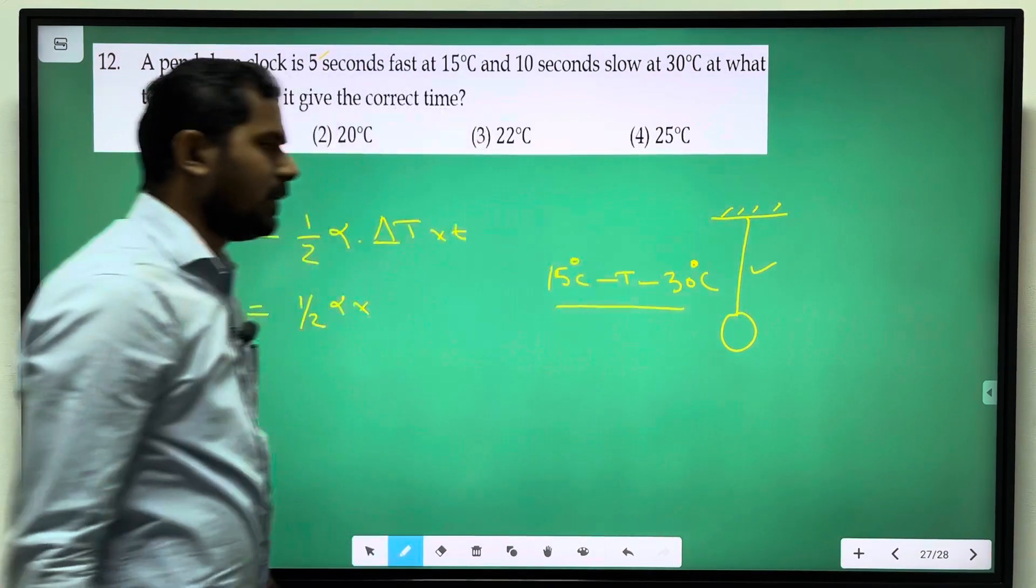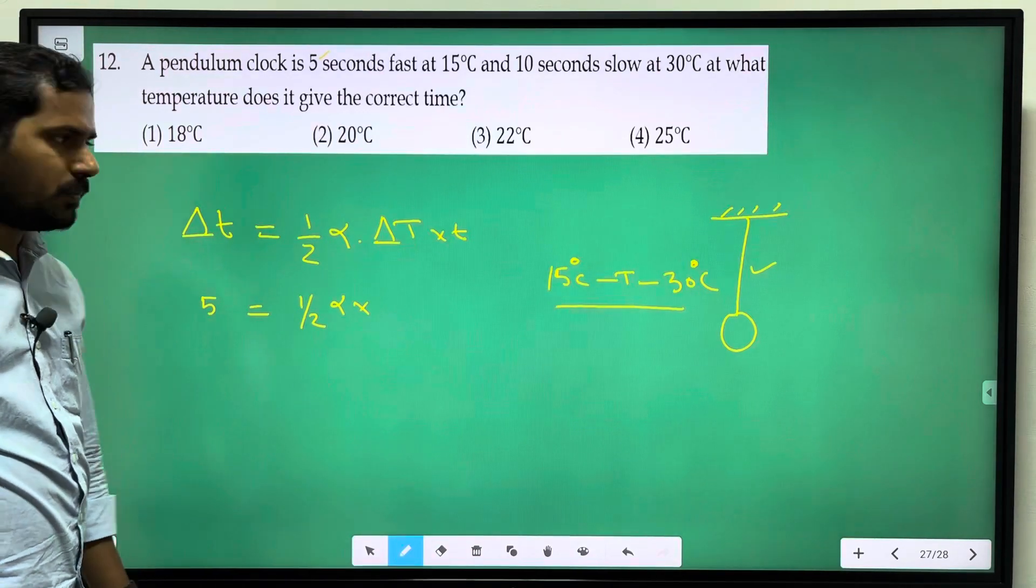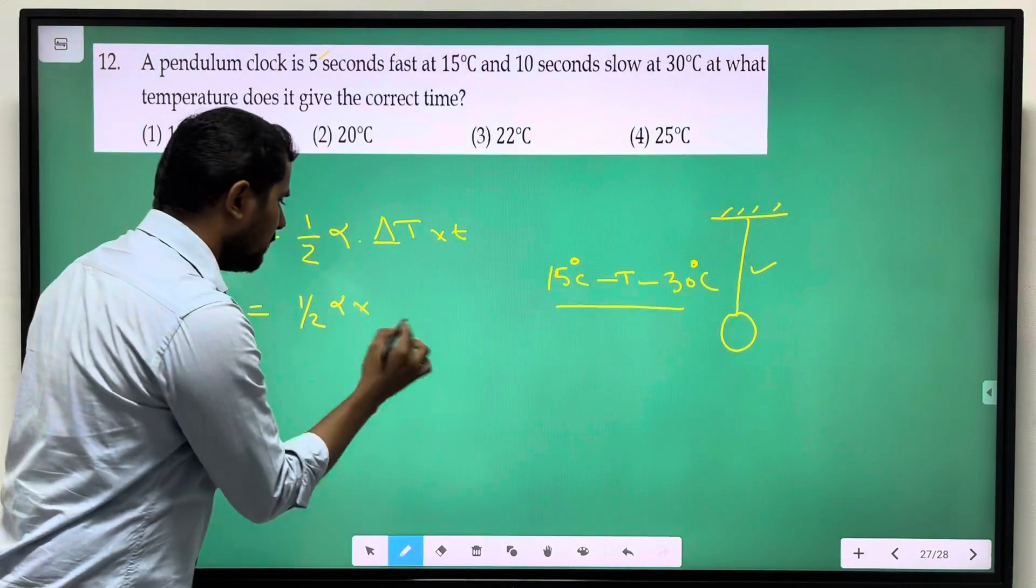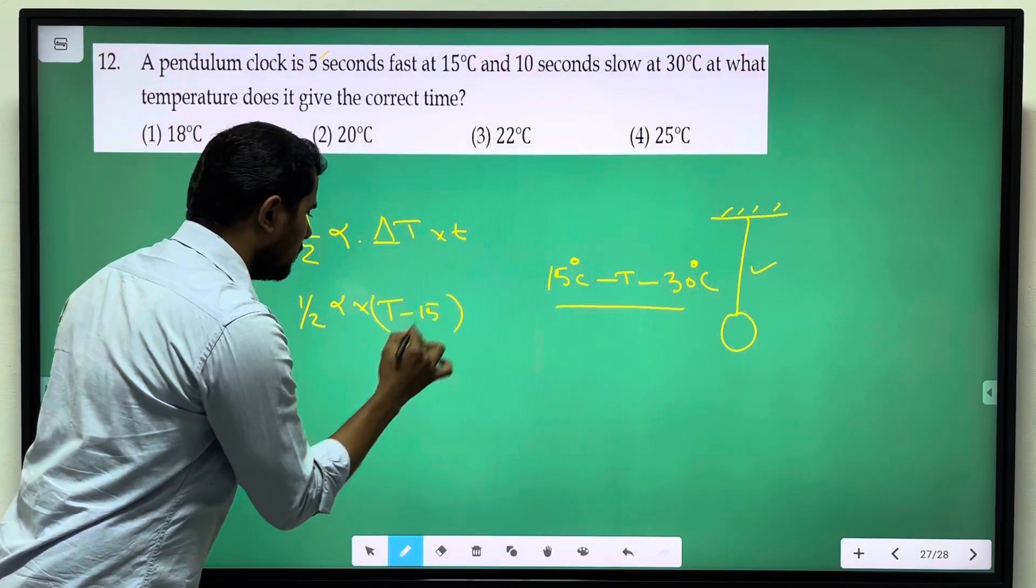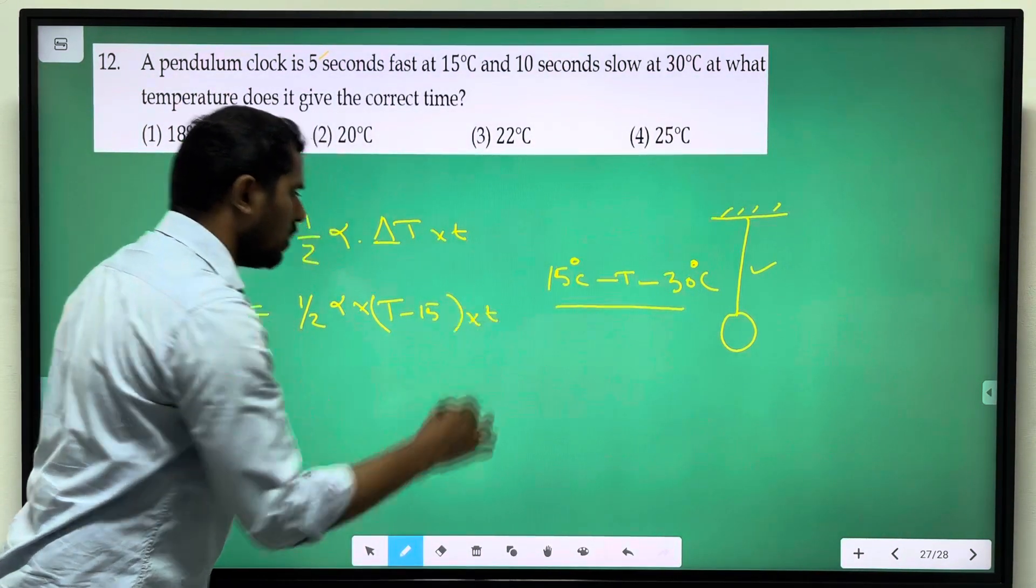So in particular temperature T we will find out. Del T, T minus 15 into small t.